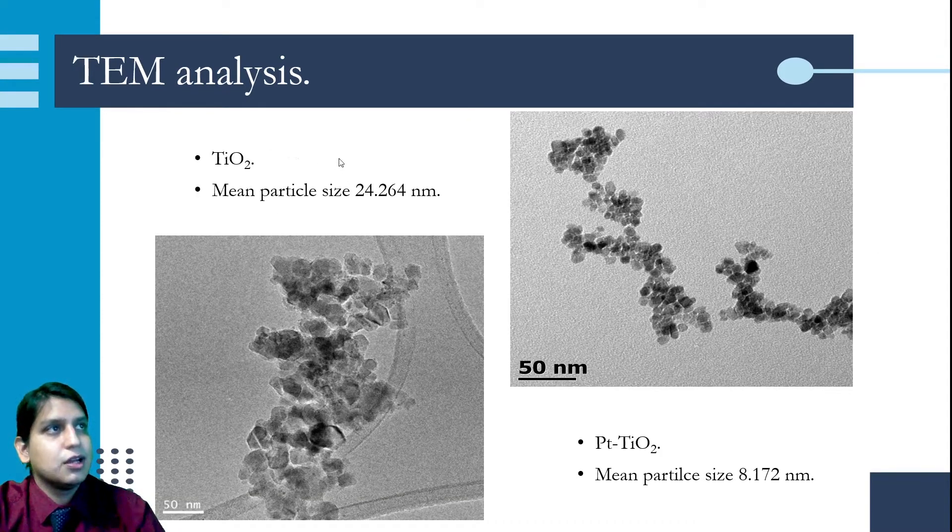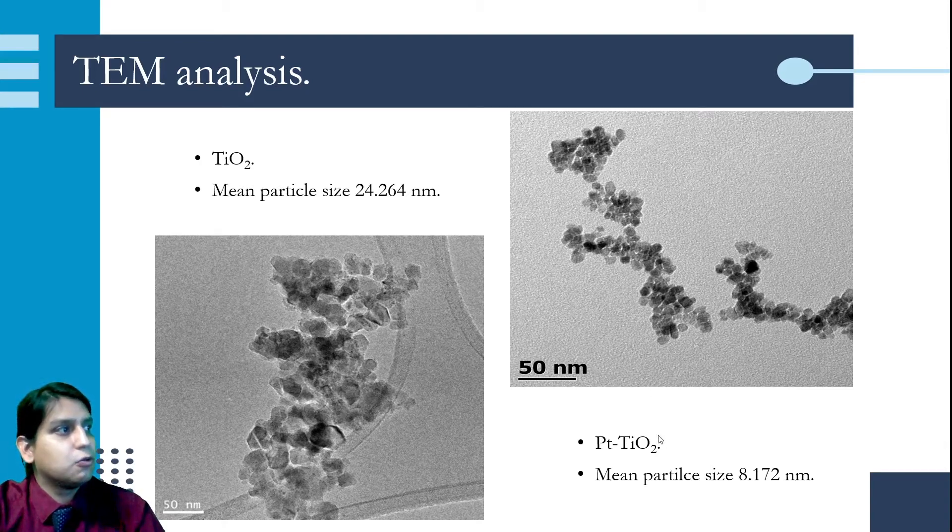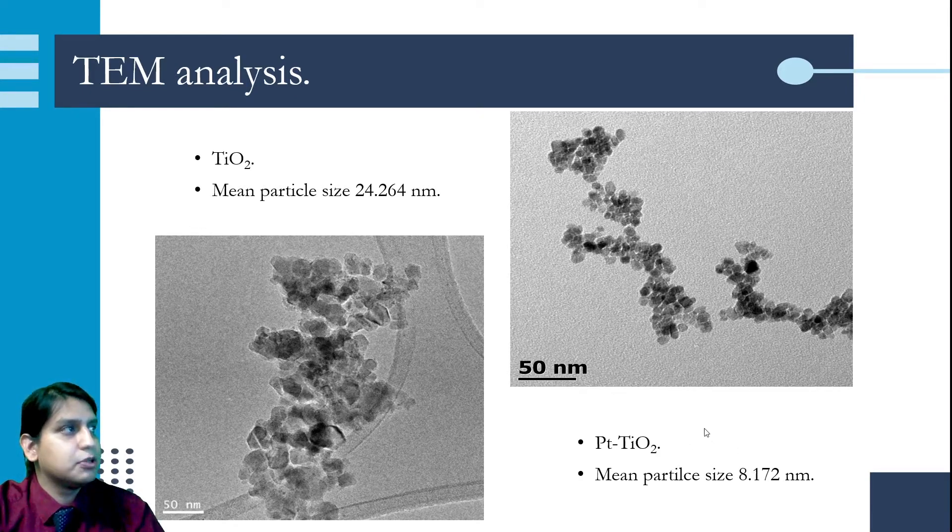In the TEM analysis of pure titanium dioxide, we have a mean particle size of 24 nanometers, whereas in platinum-titanium dioxide, we have a mean particle size of 8 nanometers.